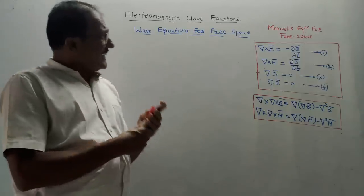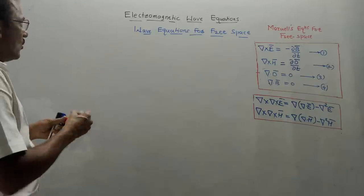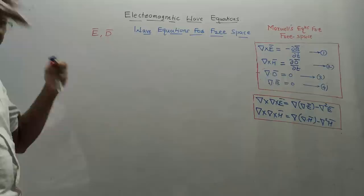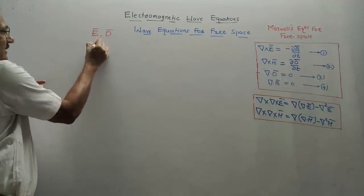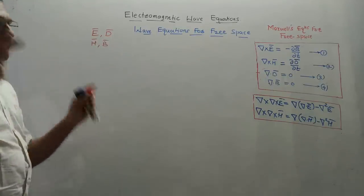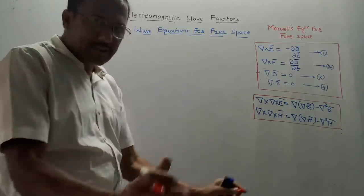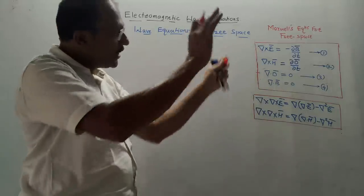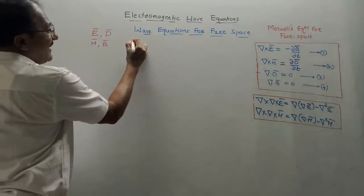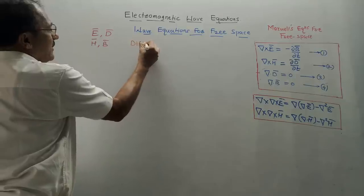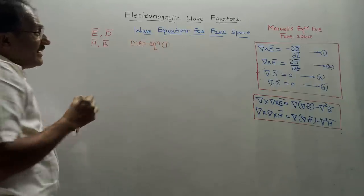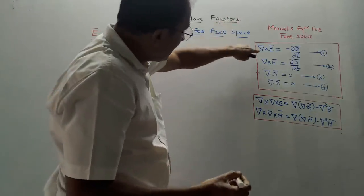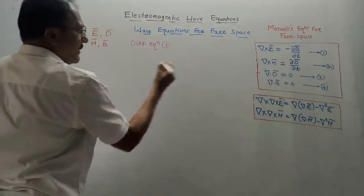For the second set, we want equations in terms of H̄ and B̄. The procedure is very similar to the first part — just interchange the order. Instead of differentiating equation 2 and taking curl of equation 1, now differentiate equation 1 and take curl of equation 2.